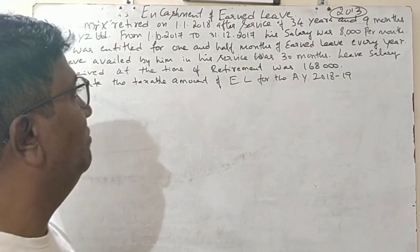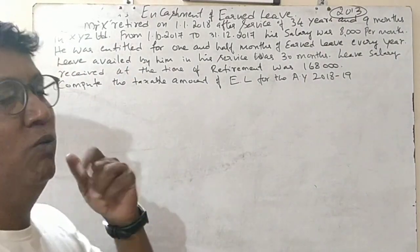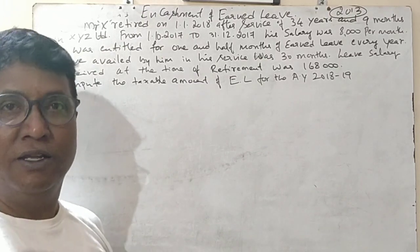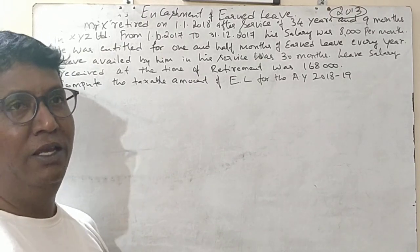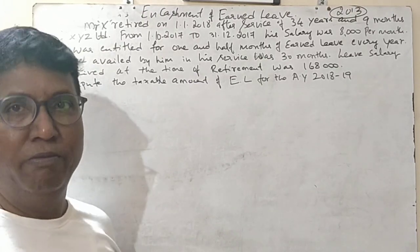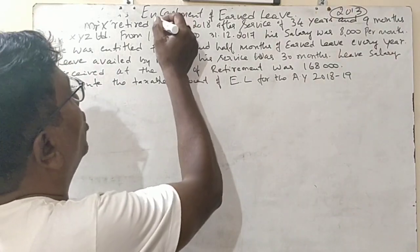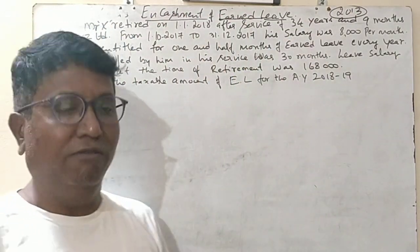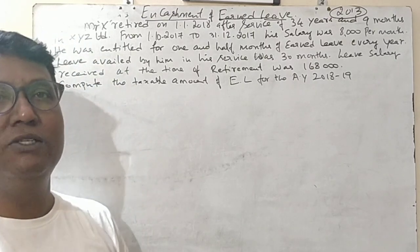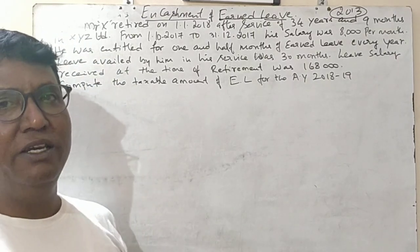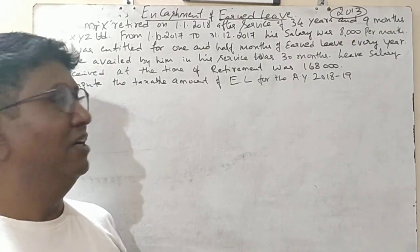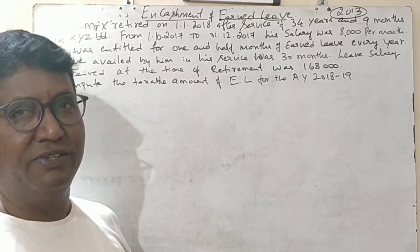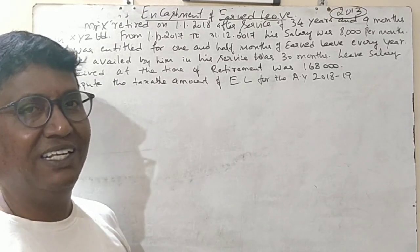Hello guys, today we have one more topic to understand in income tax, which is meant for the fifth semester and is covered in many universities. The topic is the encashment of earned leave. When an employee is working, the employer will give three to four types of leaves. One is called casual leave.